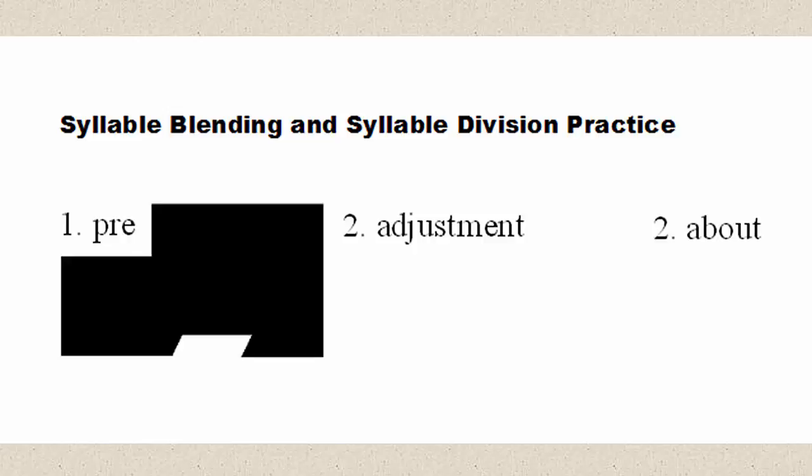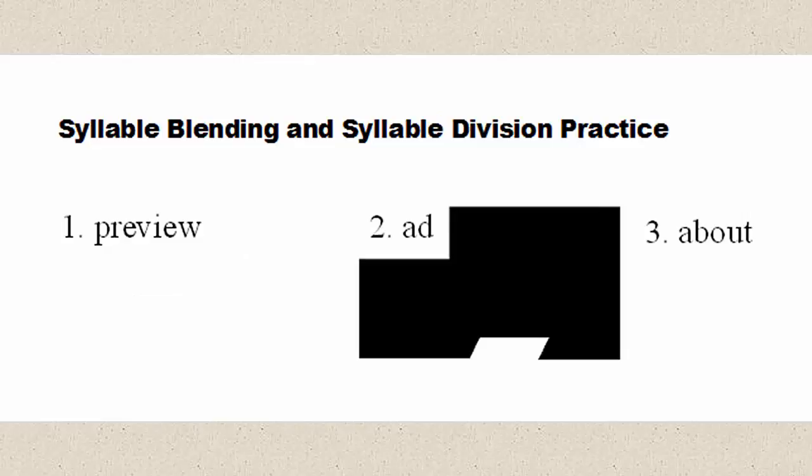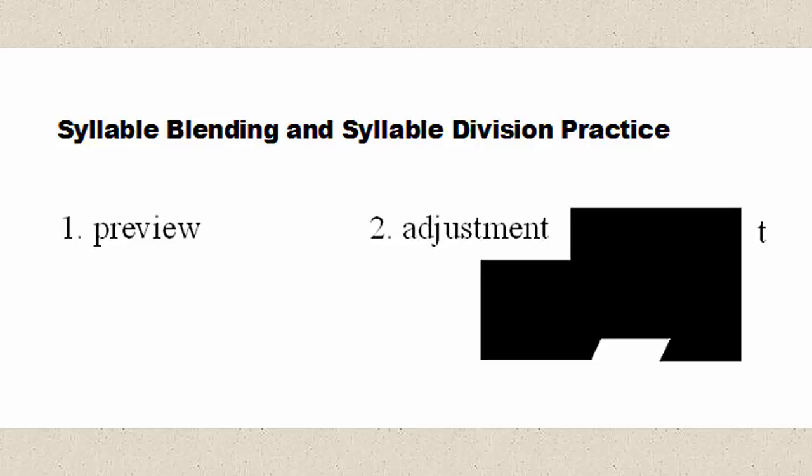Let's practice some of the syllable blending. Syllable: 'pre.' Syllable: 'view.' Whole word: 'preview.' Snap and clap: 'pre-VIEW.' Syllable: 'ad.' Syllable: 'just.' Syllable: 'ment.'